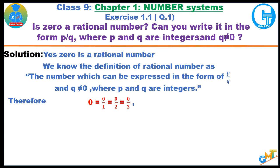Therefore, we can write 0 as either 0 upon 1, or 0 upon 2, or 0 upon 3, etc. It may be negative also.